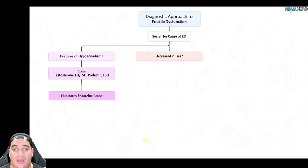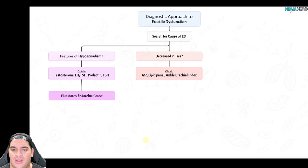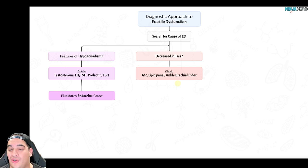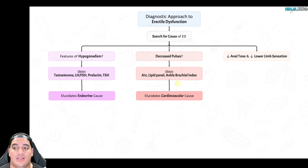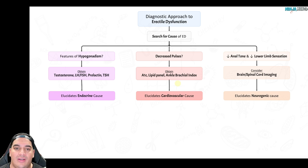If a patient has claudication around the hips and buttock area with erectile dysfunction, consider Leriche syndrome — underlying atherosclerosis of the aortoiliacs. Check HbA1c, lipid panel, and ankle-brachial index (ABI). An ABI less than 0.9 suggests PAD; aortoiliac disease typically presents with buttock pain, hip pain, decreased pulses, and erectile dysfunction as a vascular cause. For neurogenic causes — strokes, spinal cord injury, diabetic neuropathy — check for other neurological deficits such as poor anal tone or poor lower limb sensation, which may warrant brain and spinal cord imaging.